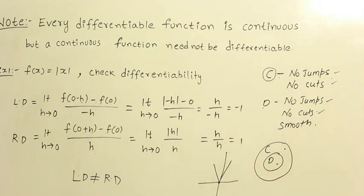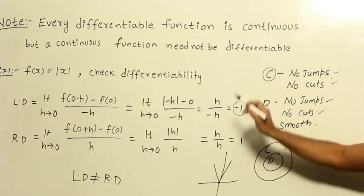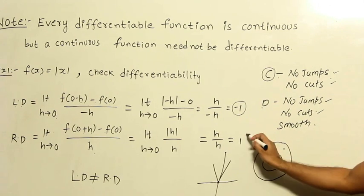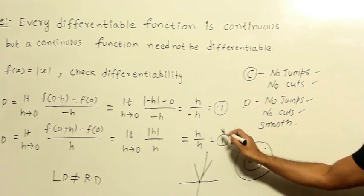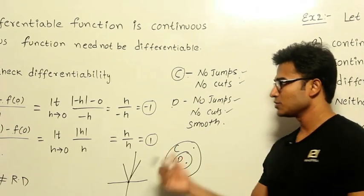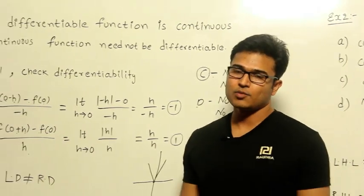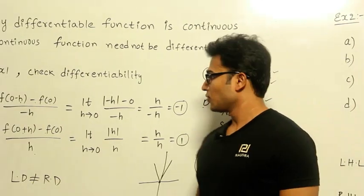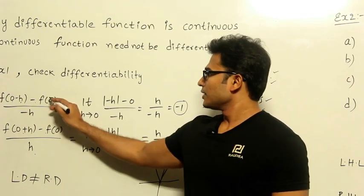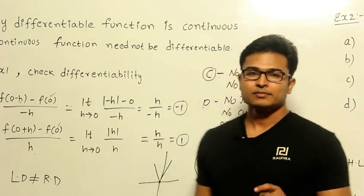So if you observe, the left-side derivative is −1 and the right-side derivative is +1. Both are not equal, and therefore we can say that f(x) = |x| is not differentiable — not derivable — at that point, which is x = 0.